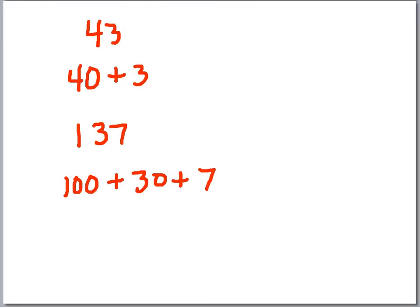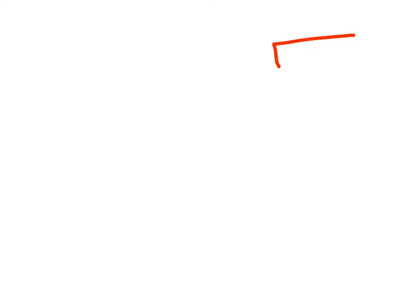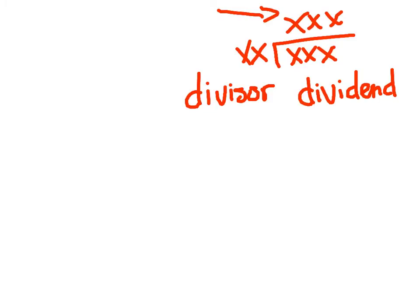I have to tell you, this is probably one of my favorite lessons, so make sure you pay attention and follow through with this. I think you'll find that this will allow you to break numbers down and be able to divide quickly in your head. Just to review: the number down here is your dividend, this number that you're dividing into the dividend is your divisor, and whatever the answer may be, that right there is your quotient.